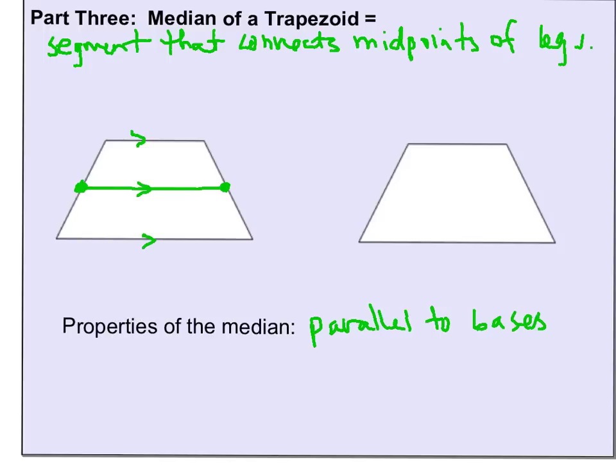Because it is connecting the midpoints of the legs, we know that these pieces have to be congruent and these two have to be congruent. Now this is really important to understand: not all four of these are congruent necessarily, but the two on this side have to be congruent because this is the midpoint of that leg, and the two on this side have to be congruent because it's the midpoint of this leg.